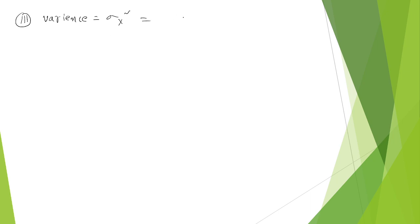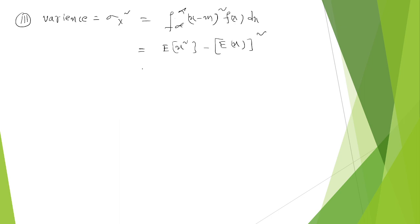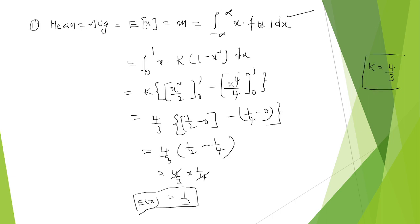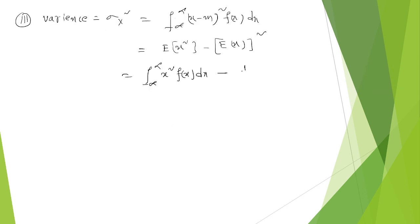Coming to the third point, variance: variance sigma x squared equals the integral from minus infinity to plus infinity of (x minus m) whole squared times f of x dx. After expansion, this becomes E of x squared minus E of x whole squared. E of x squared means the integral of x squared multiplied with f of x dx, minus E of x squared. We have already calculated the mean as 1 by 3, so we subtract 1 by 3 whole squared.